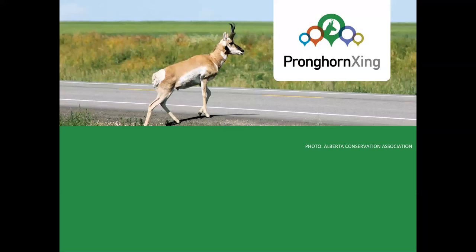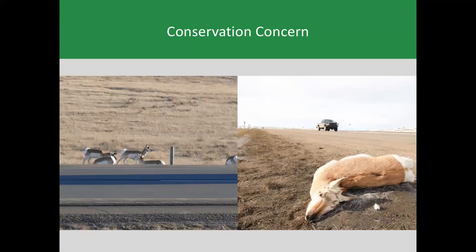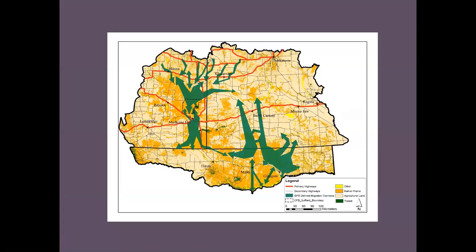I'm going to switch gears to another initiative that Mastakis is undertaking with a number of partners — a program developed to address a specific species of conservation concern: pronghorn. Pronghorn are provincially listed as sensitive in Alberta, and they're a migratory species that really rely on a highly connected landscape to survive. Every fall and spring, pronghorn migrate between summer and winter ranges, and that movement can be between Alberta, Saskatchewan, and Montana. Research conducted by Alberta Conservation Association, the University of Calgary, and Alberta Environment Parks has shown that some pronghorn travel 400 kilometers from winter range, and even over 800 kilometers over the course of a year.